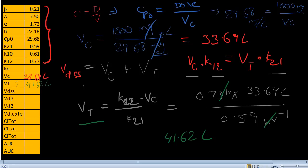Now that we have Vt and Vc, can we calculate Vdss? Yes we can calculate it. Vdss is equal to Vc, that's 33.69, plus 41.62. Is equal to 75.32 liters. So we have Vdss, we have Vc, we have Vt.